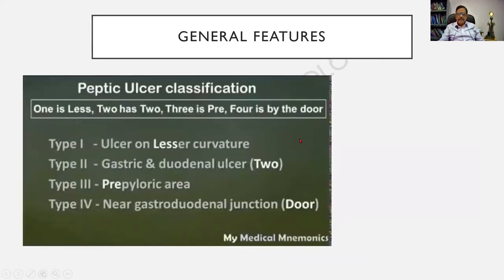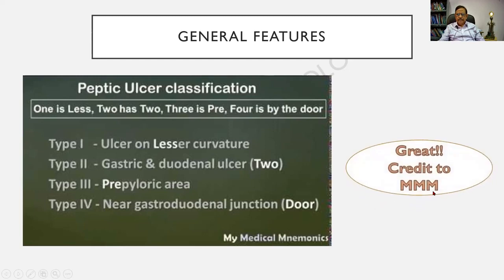This is a beautiful mnemonic from Medical Mnemonics — hats off to them. There are four types of gastric ulcers. Type one: 'one' sounds like 'less,' so it occurs on the lesser curvature. Type two has two components: it occurs in both gastric and duodenal regions. Type three is 'pre,' meaning the pre-pyloric area. Type four is 'the door,' meaning near the gastroduodenal junction. Credit to My Medical Mnemonics.